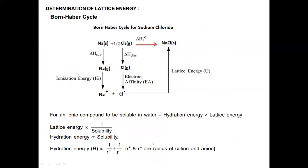Determination of lattice enthalpy is explained by the Born-Haber cycle, taking the example of sodium chloride. Sodium is present in solid state and chlorine is present in gaseous state. We can write the formation of NaCl as: Na(s) + ½Cl₂(g) → NaCl. The change in energy is known as enthalpy of formation — the formation of one mole of compound from its constituent particles. But this does not happen in a single step.